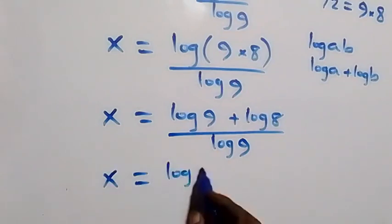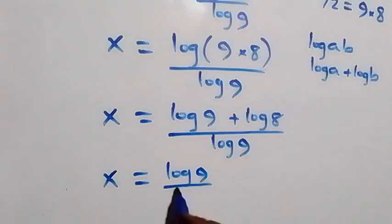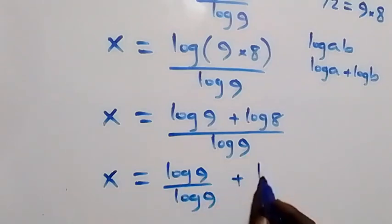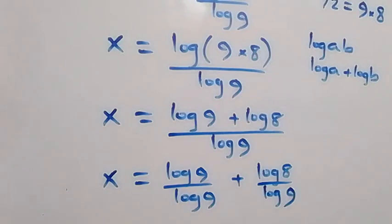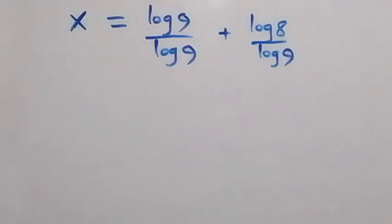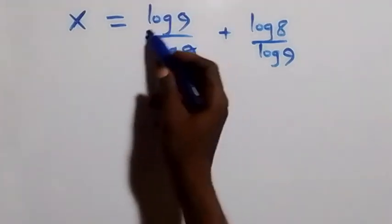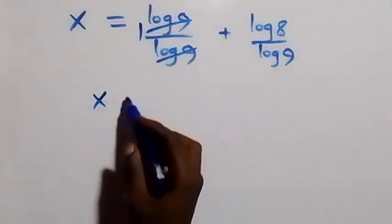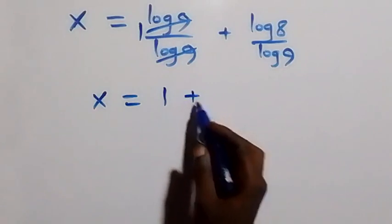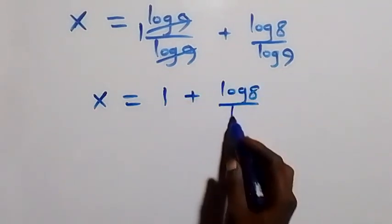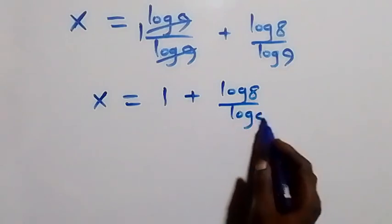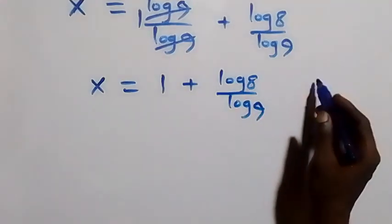Separating the fraction, log 9 over log 9 equals 1, so we have 1 plus log 8 over log 9.